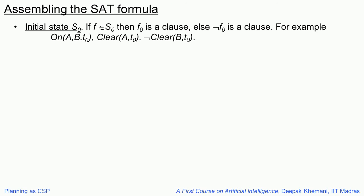You have to put together this SAT problem piece by piece. In the initial state S0, if a fluent is true in that state, then we add f as a clause — we assume it is in some CNF-like form. If it is not true, then we add the negation of f0 as a clause. For example, in the problem we were looking at, if a is on b, then clear a is true and not clear b is true. We should also state where b is — for instance, on-table b at time 0.